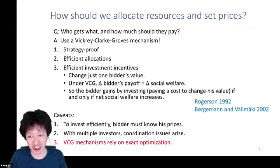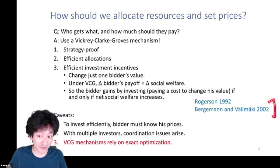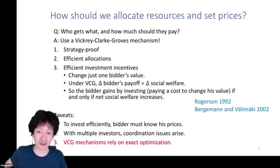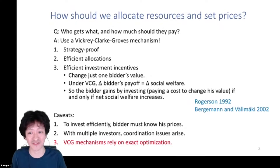So the bidder will make this investment if and only if doing so would maximize social welfare net of investment costs. This is not an original observation — it goes back at least as far as Rogerson 1992, and a related observation appears in an incomplete information world in Dirk's paper with Yusuf Valimaki in 2002.